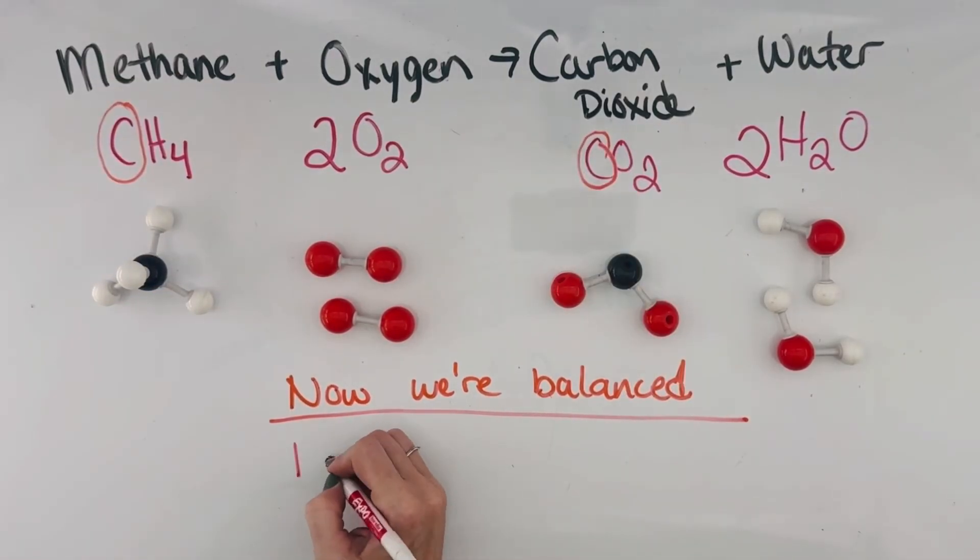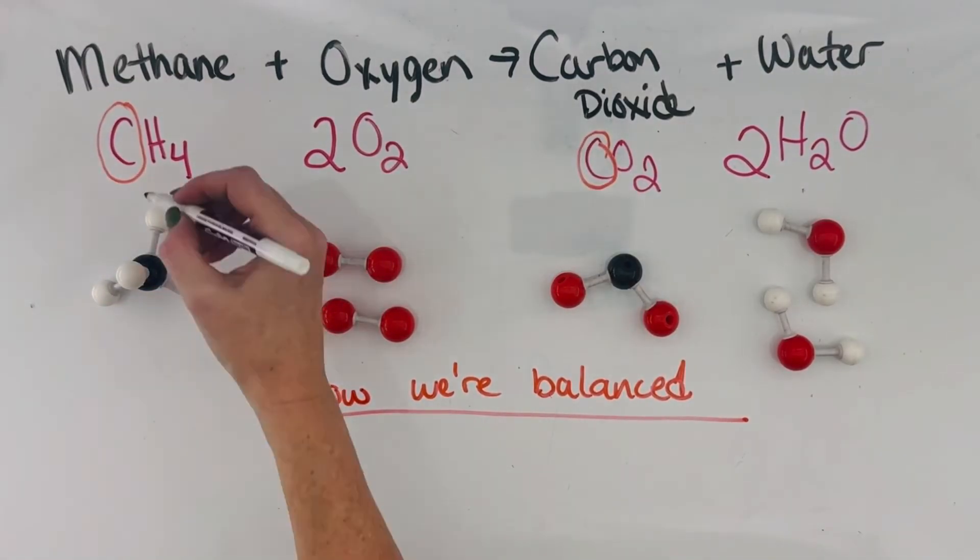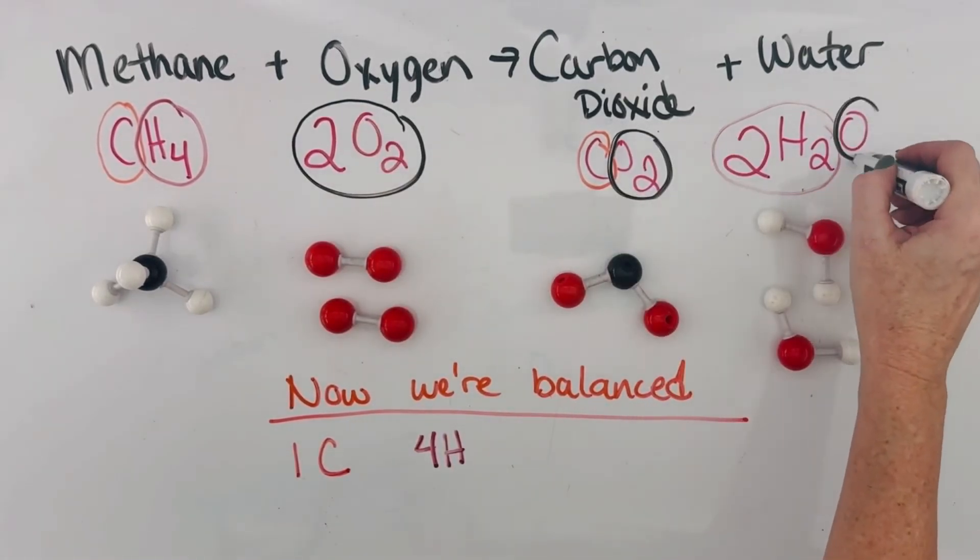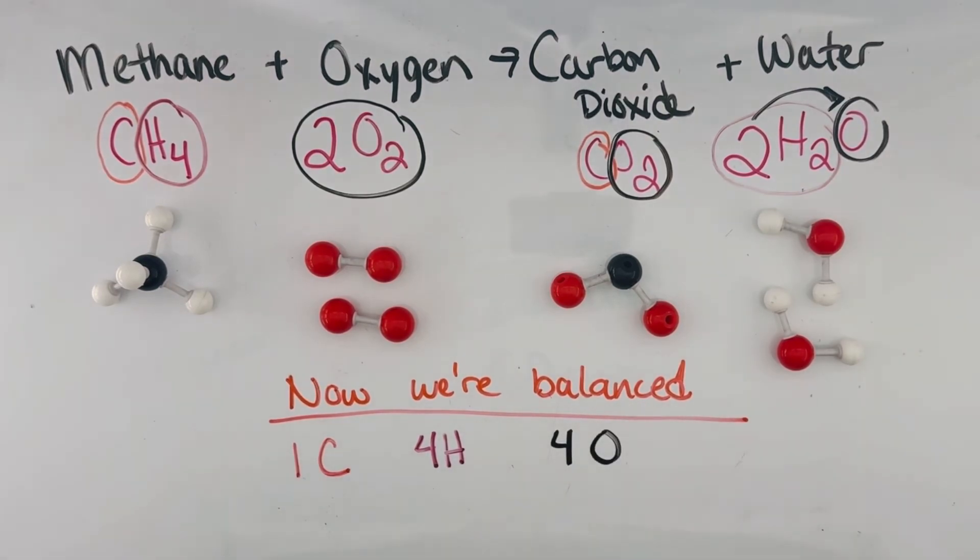We start with one carbon and we end with one carbon. We start with four hydrogens and we end with four hydrogens. And we start with four oxygens and we end with four oxygens. They just rearrange into different chemical compositions.